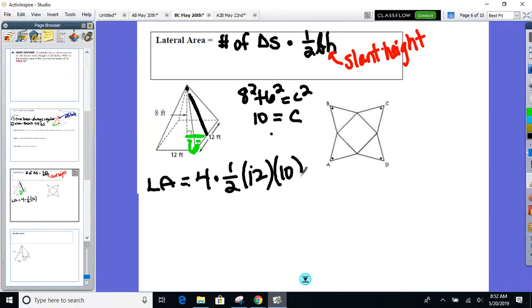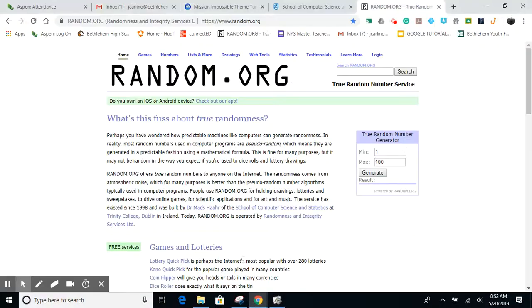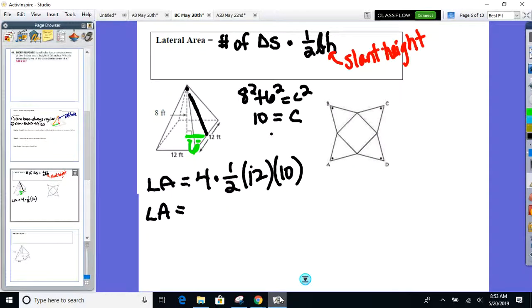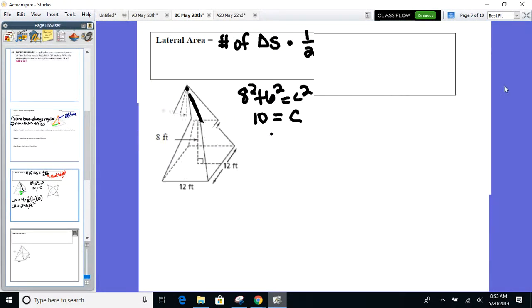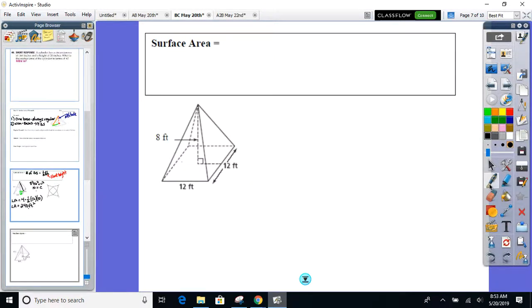So now we plug it in. 240. Lateral area of this pyramid. Now surface area. Now I'm just going to add on the bases.